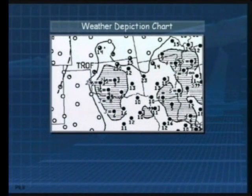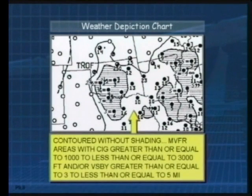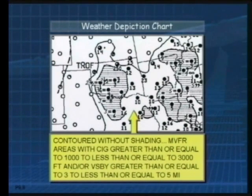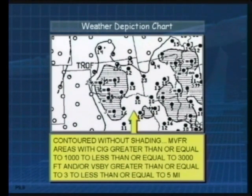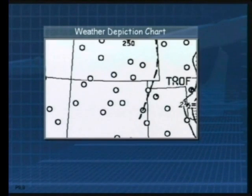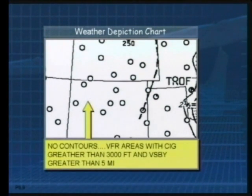Here's another shot. In this case, we're looking for areas that are enclosed but not shaded — those are marginal VFR areas, with ceilings greater than or equal to 1,000 feet up to 3,000 feet, and visibilities greater than or equal to 3 miles to 5 miles. In the wide open spaces, that simply means VFR flight — ceilings greater than 3,000 feet and visibility greater than 5 statute miles.